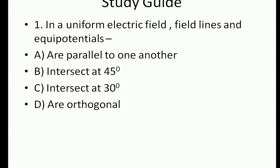The first question is: in a uniform electric field, the field lines and the equipotentials — what is the relationship? The four options are: they are parallel to one another; they intersect at 45 degrees; they intersect at 30 degrees; or they are orthogonal. You need to find which option is correct.